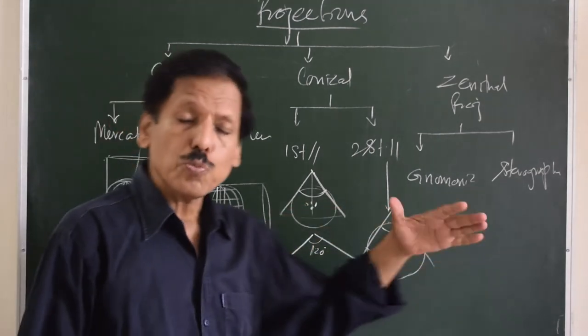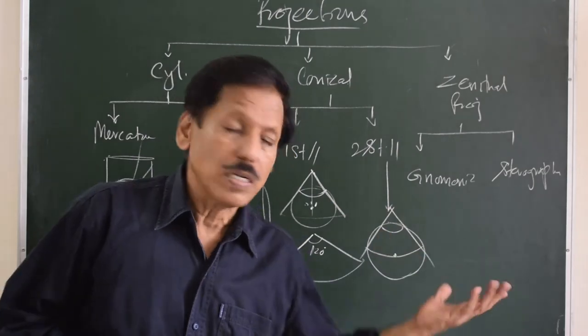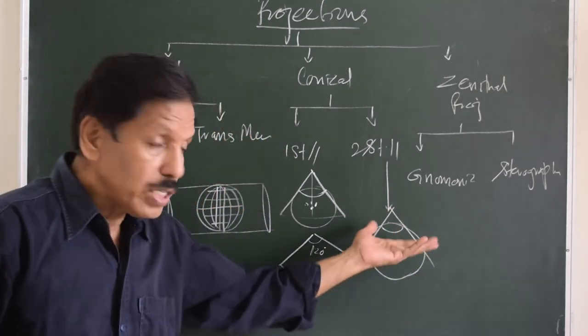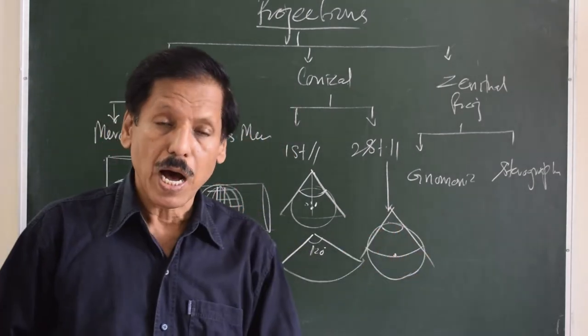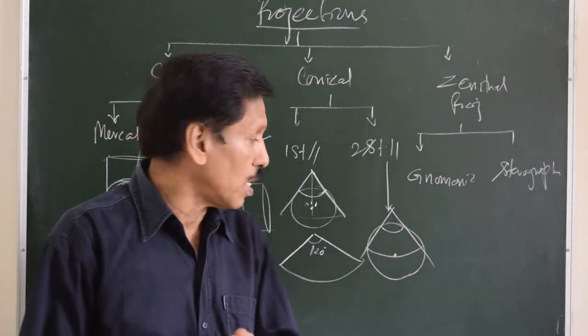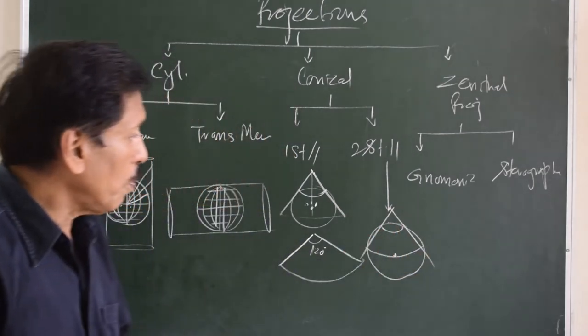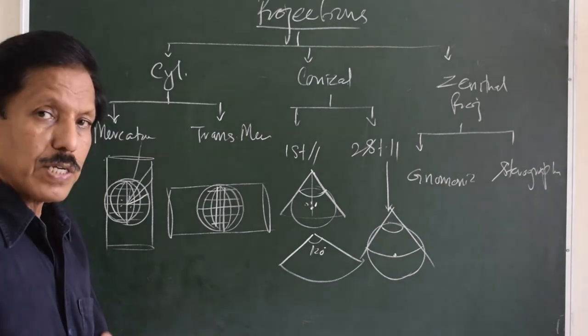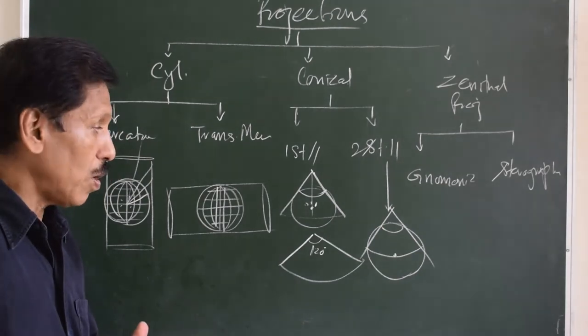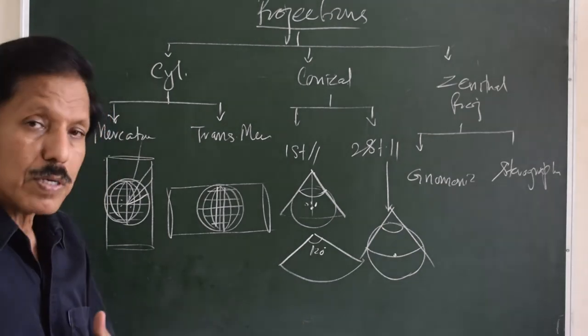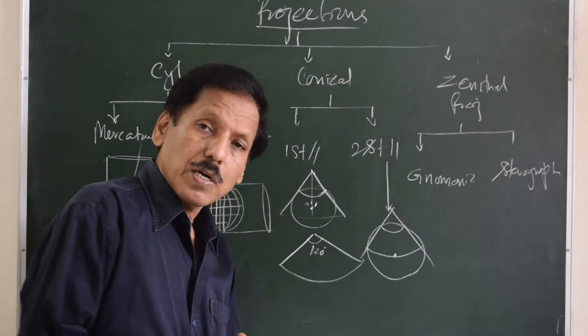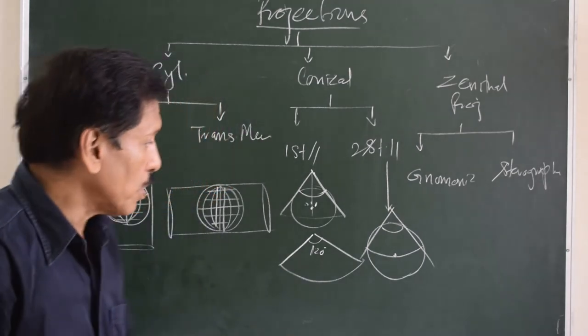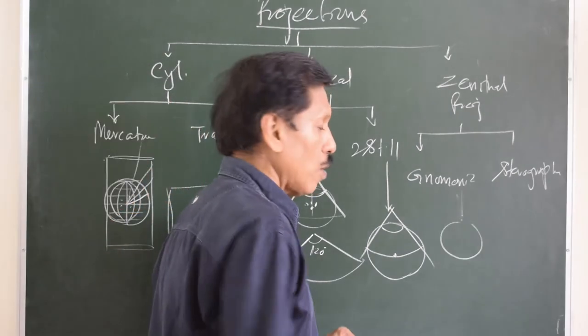The distance between the two parallels of latitude in the two-standard-parallel conical projection can be adjusted to make it orthomorphic, in which case it may be called Lambert's conformal projection. Conformal means orthomorphic.